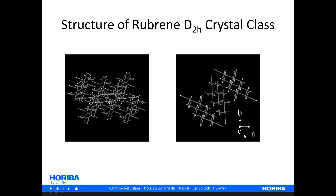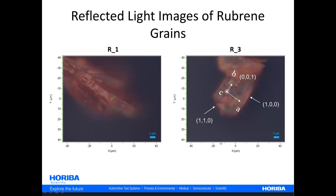This last structure is very important because I've labeled the crystallographic axes here — this happens to be the orientation of a crystal habit that is favored in the crystallization of rubrene. Here are two reflected light images of rubrene grains taken right out of the bottle. Grain R1 has a random orientation and is probably polycrystalline, whereas R3 has a very specific crystal habit, and we can superimpose the crystallographic axes on this habit.